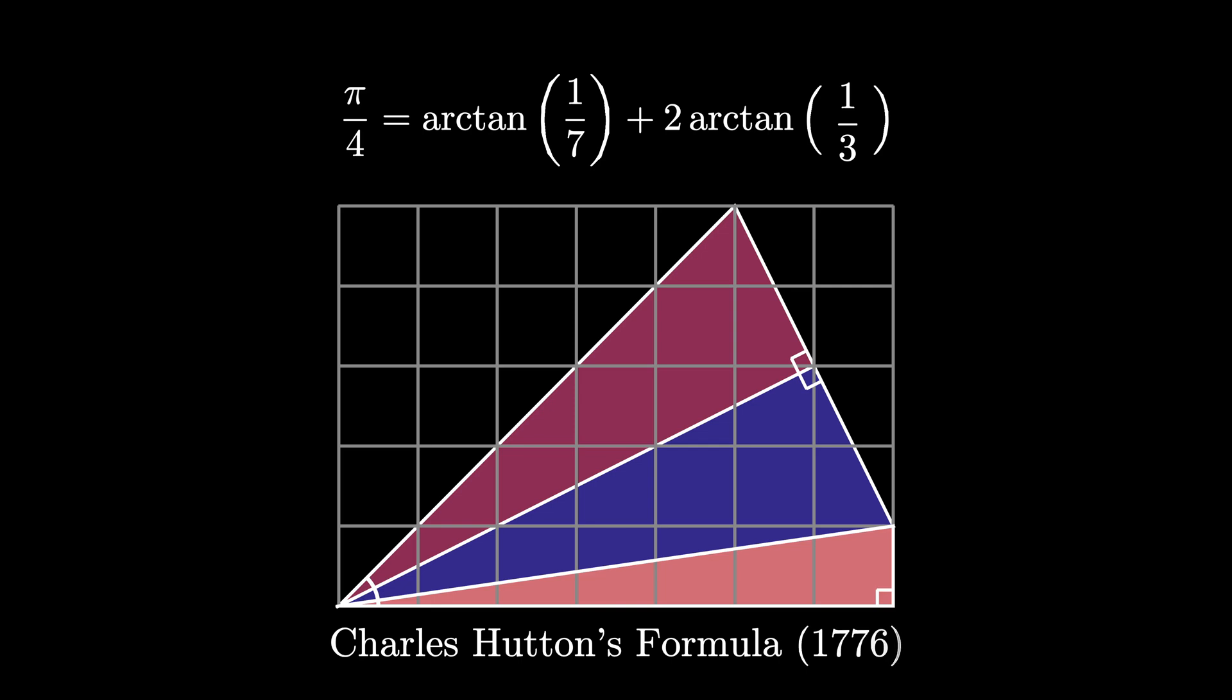This is Charles Hutton's formula for pi over 4, and it's from 1776. However it does seem that John Machen knew this formula 70 years earlier.